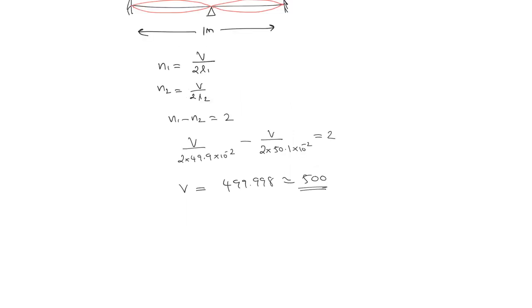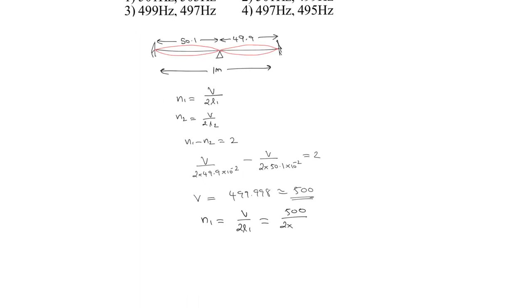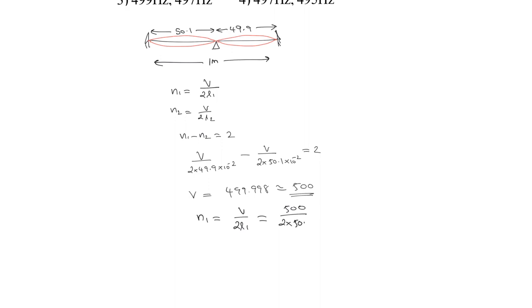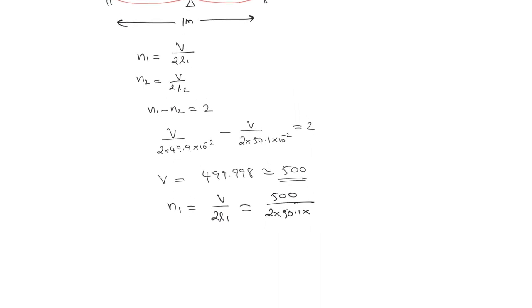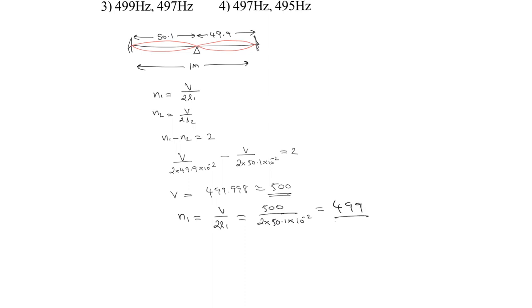As we know the velocity, we can calculate ν₁ = V/(2L₁) = 500/(2×L₁). With L₁ = 50.1×10⁻² meters, this equals approximately 499 Hz. The other frequency is 2 Hz more, so we get around 501 Hz.